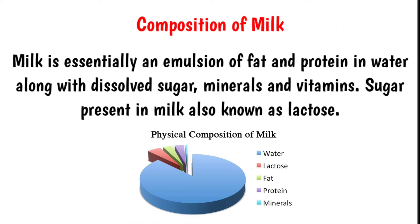Milk is essentially an emulsion of fat and protein in water, along with dissolved sugar, minerals, and vitamins. The sugar present in milk is also known as lactose, and the natural sweetness in milk is due to the presence of lactose. These constituents are present in milk of all mammals, though their proportions differ from one species to another.